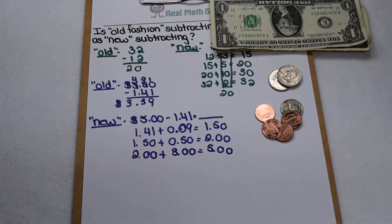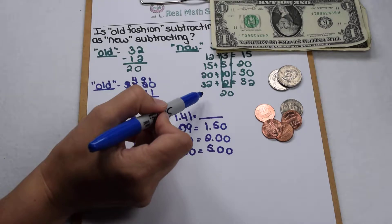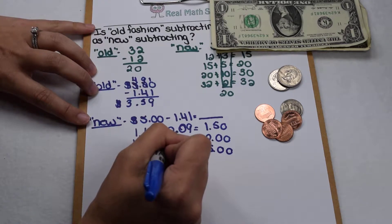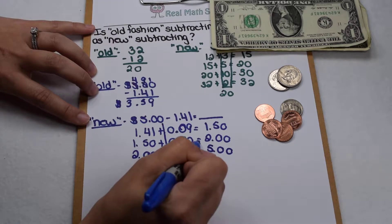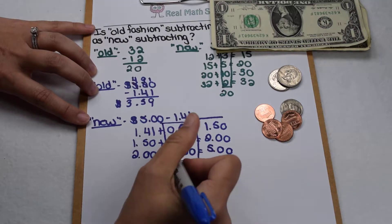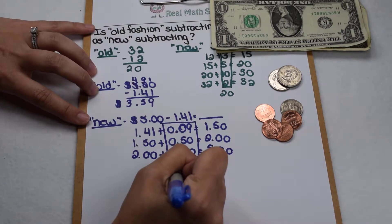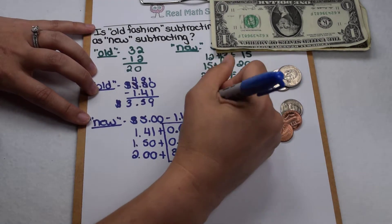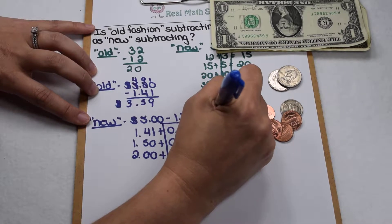So without doing that borrowing, but counting up like our students now do, we came out with that same process in our head and they got a total of $3.59 in change. And we did it by counting up.